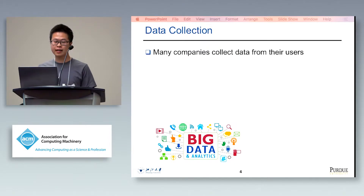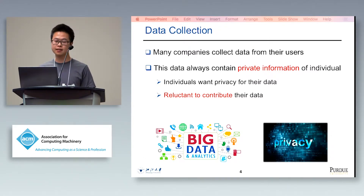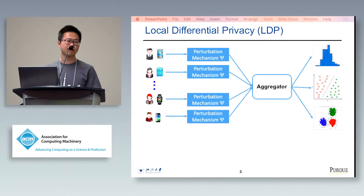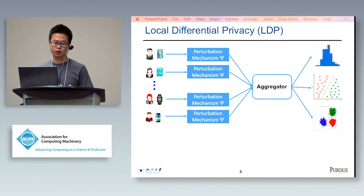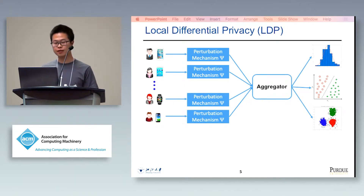Nowadays, many companies collect data from their users to do analysis and develop new technologies. However, this data will always contain some sensitive information about individuals. If their privacy is not well protected, the users will be reluctant to contribute their data. The notion of local differential privacy is a promising way to privately collect data from individuals and allow the aggregator to accurately extract some useful information.